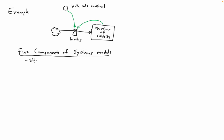The first two we've talked about quite a bit: stocks and flows. The stock is some quantity that can change — here it's the number of rabbits. The flow is the thing that increases or decreases the stock — here it's the birth of rabbits. It will be some number of rabbits per time, so flows often have units of quantity per time.